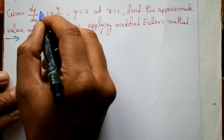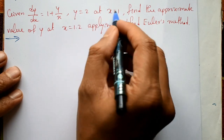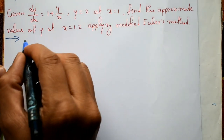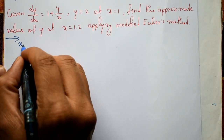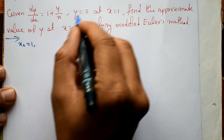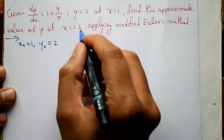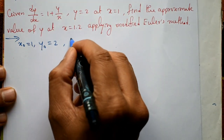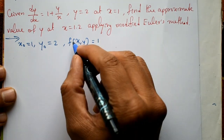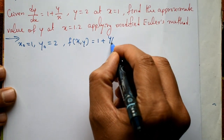This is a first order, first degree ODE with initial conditions. The initial condition is x0 equal to 1 and y0 equal to 2. The function f is equal to 1 plus y by x.